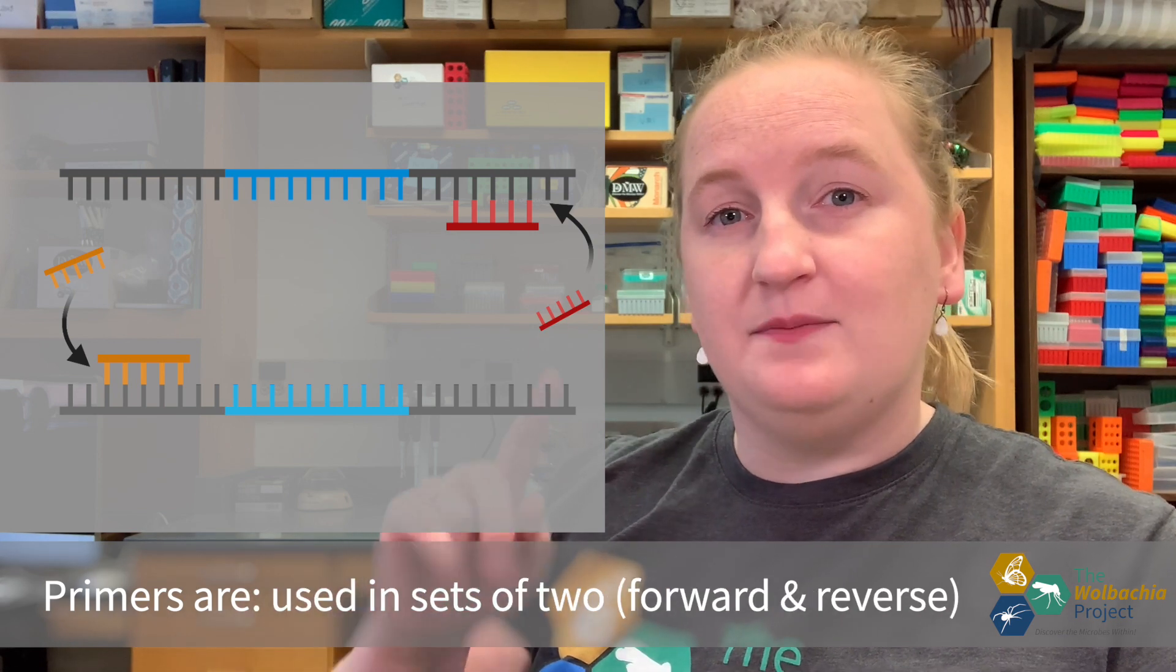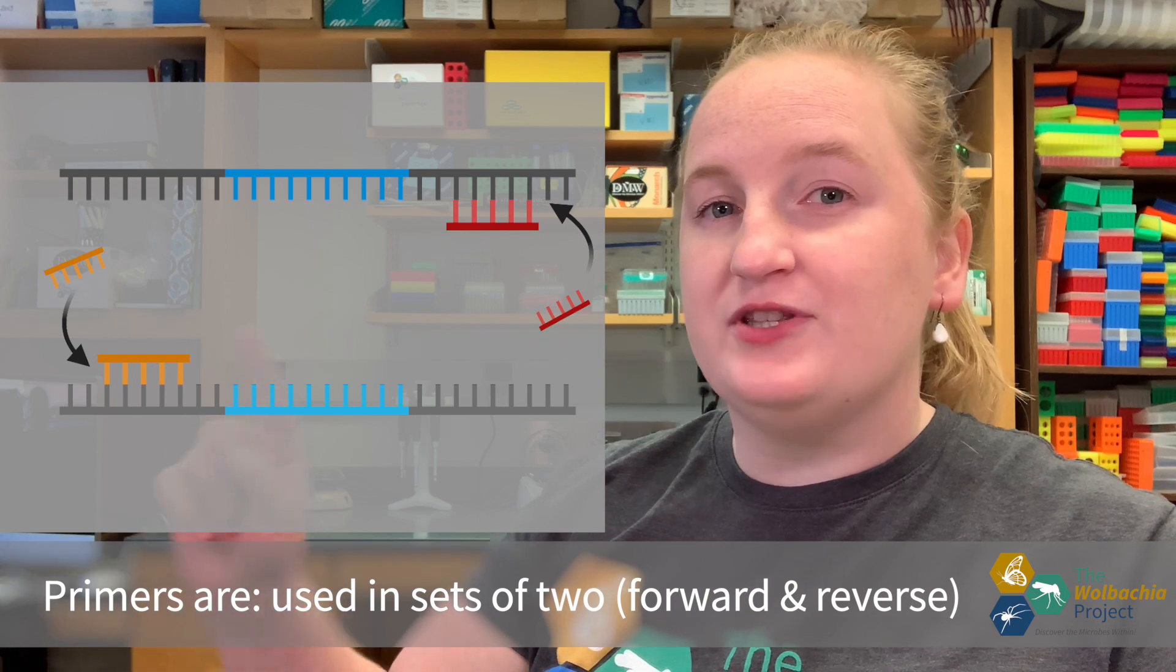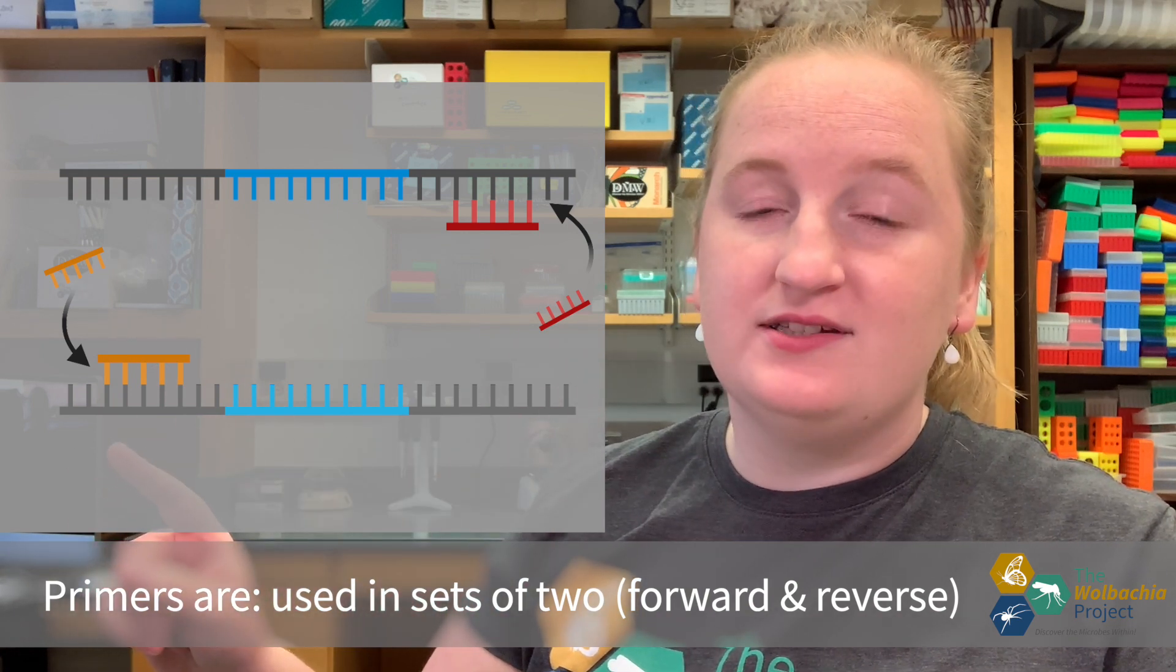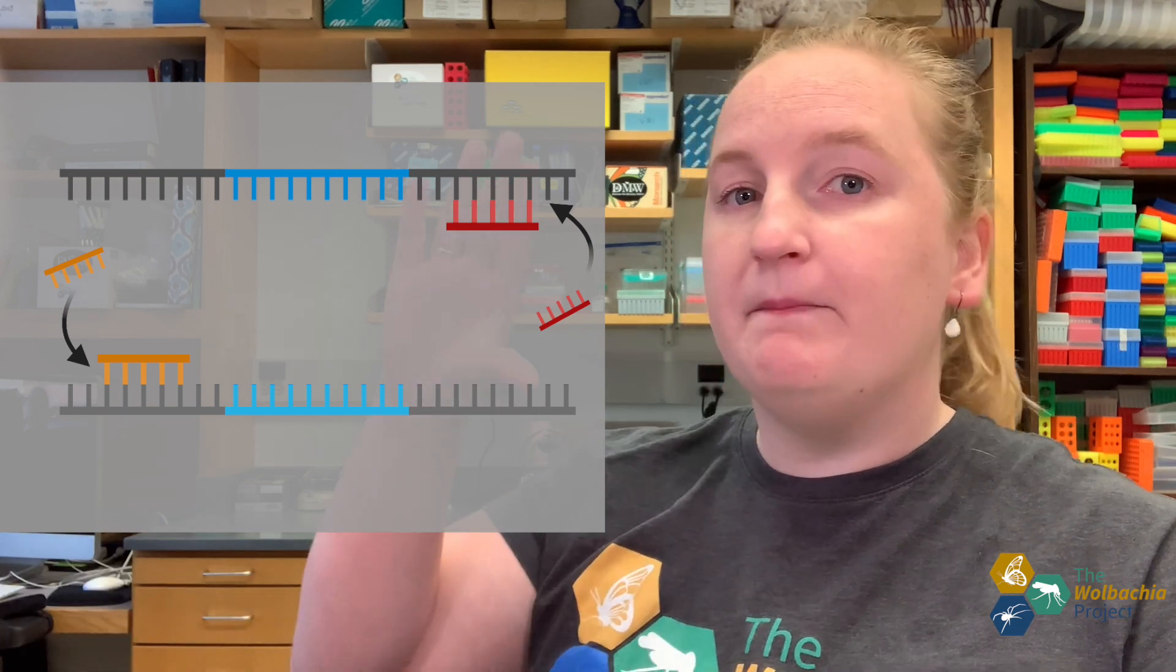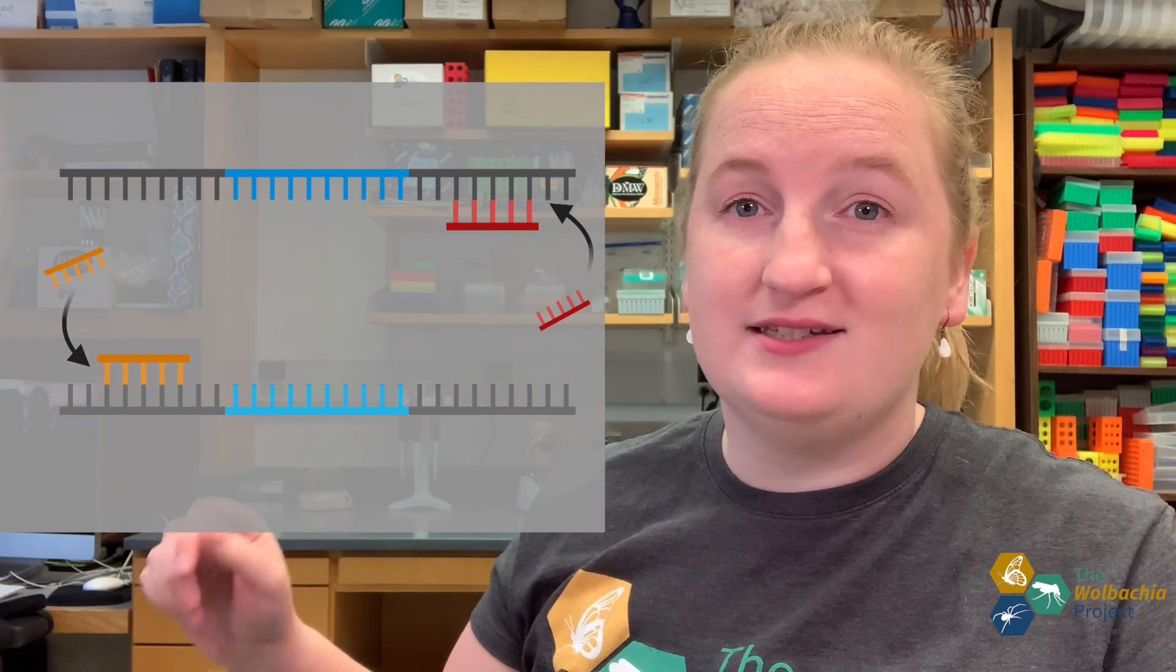We'll add primers at the beginning and end of this fragment so that we capture this entire area. These are called forward and reverse primers. Then, a special DNA polymerase that can withstand really high temperatures will bind to these primers and replicate the DNA across the entire region, adding new nucleotides. That's the general idea for one copy, but what about multiple copies? How do we amplify this exponentially?